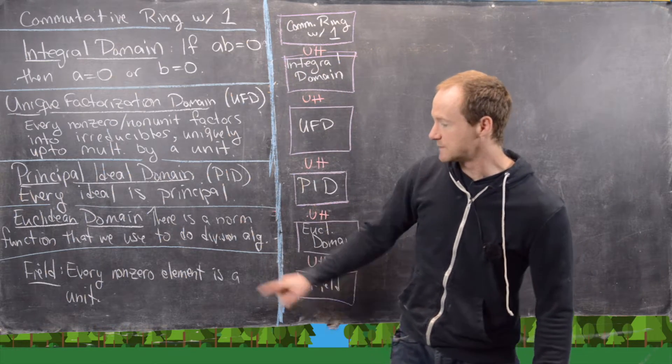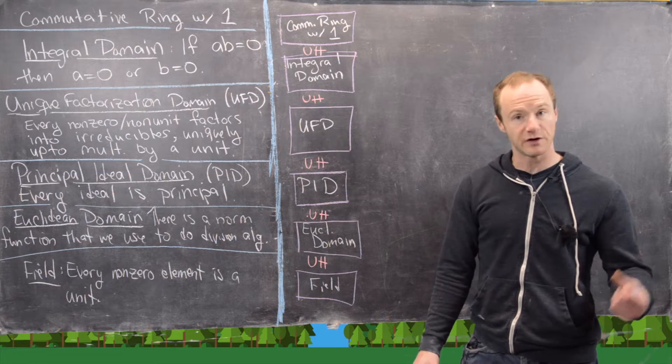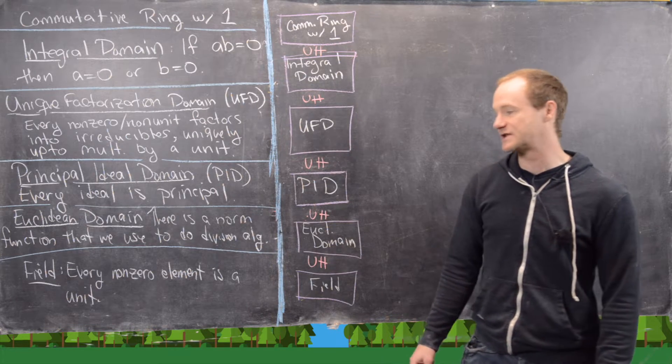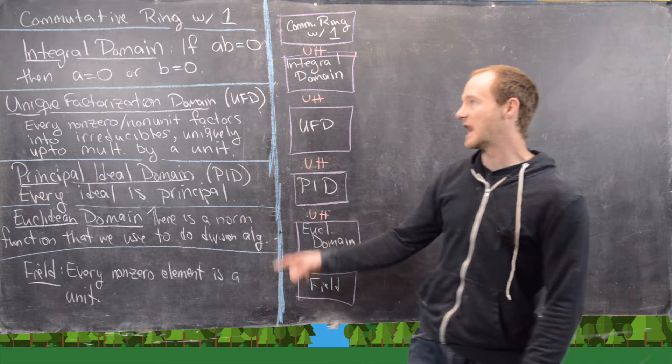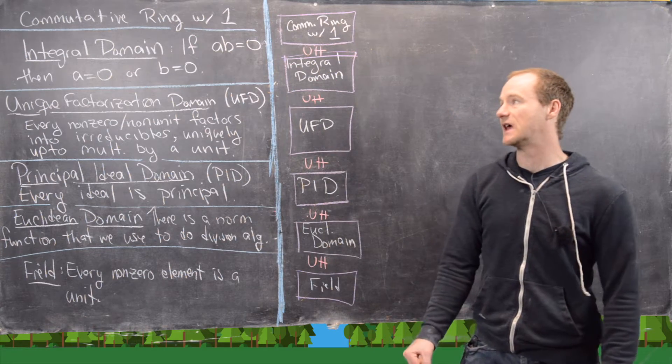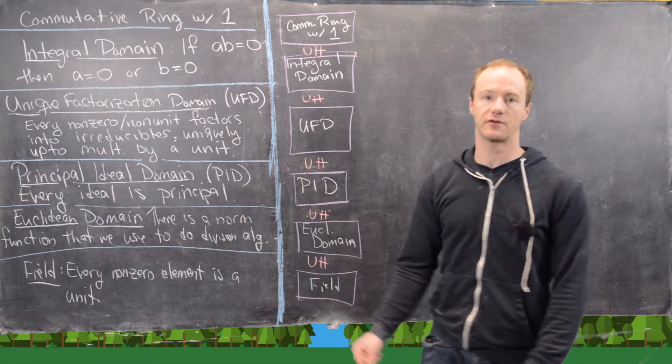Next we have a field. And a field is a commutative ring with one where every non-zero element is a unit. And actually that automatically makes it an integral domain and all of the rest of these things.